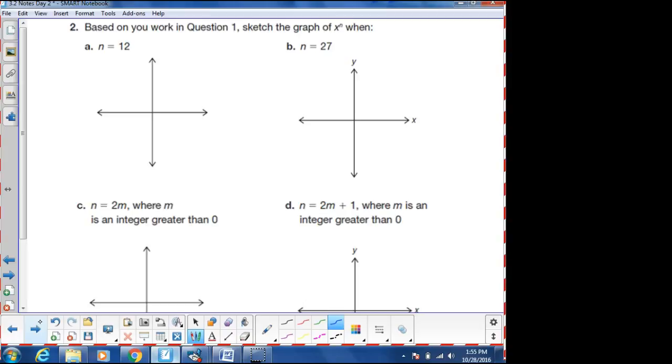So, based on our work in question one, sketch the graph of x to the n when n is 12. Well, that's even, so that's going to go to positive infinity there, and this one's going to go to positive infinity there. And again, in this middle part, the more terms that we have, that middle part will get more and more funky. Because this 12 is even, they're going to go in the same direction. Here, 27 is odd, so they're going to go in opposite directions.